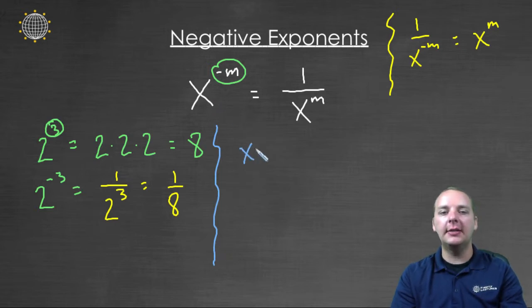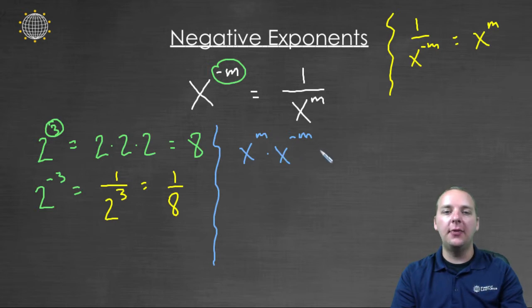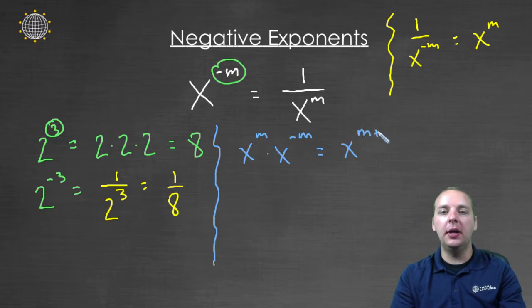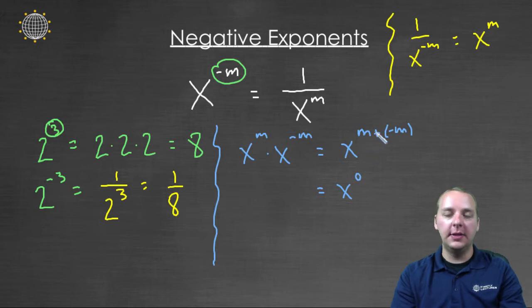What if we had x to the m times x to the negative m, and just go with me for a minute, because I'm going somewhere with this. By definition from one of your earlier rules, this would be x to the m plus negative m, because if you have like bases you can add the exponents. Which would be x to the zero.